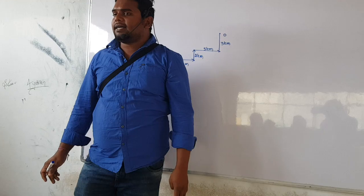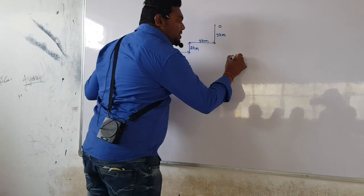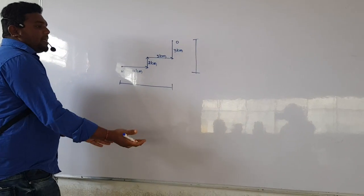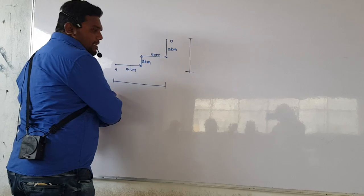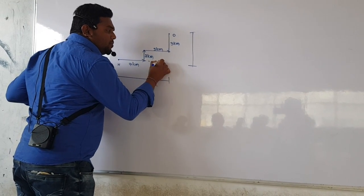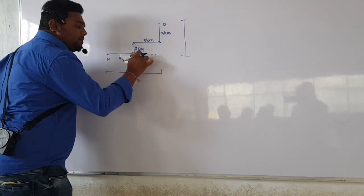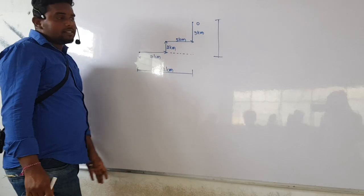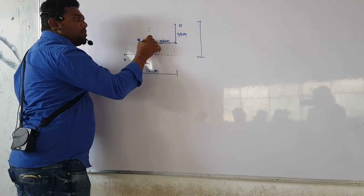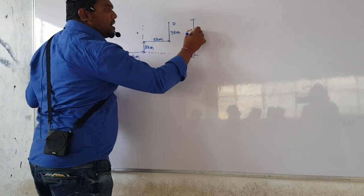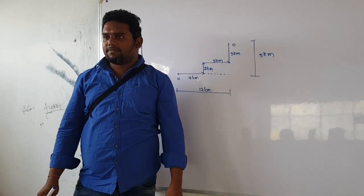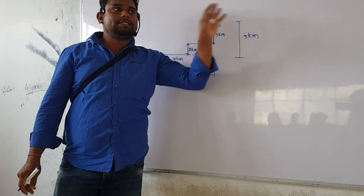First question: what is the vertical and horizontal distance? Vertical distance means nothing but height distance; horizontal distance means nothing but the cross distance. The horizontal distance is 7 km plus 5 km, which is 12 km. The vertical distance is 2 km plus 3 km, which is 5 km.